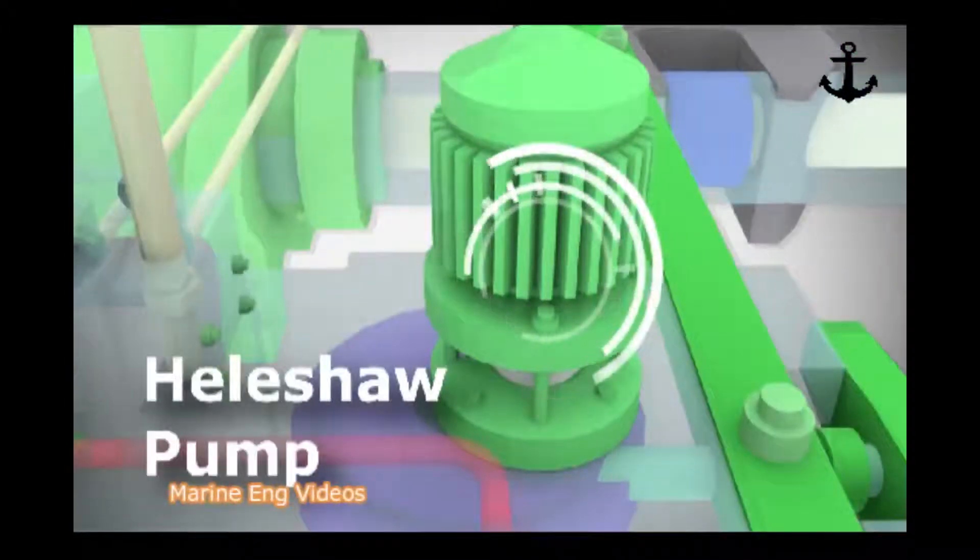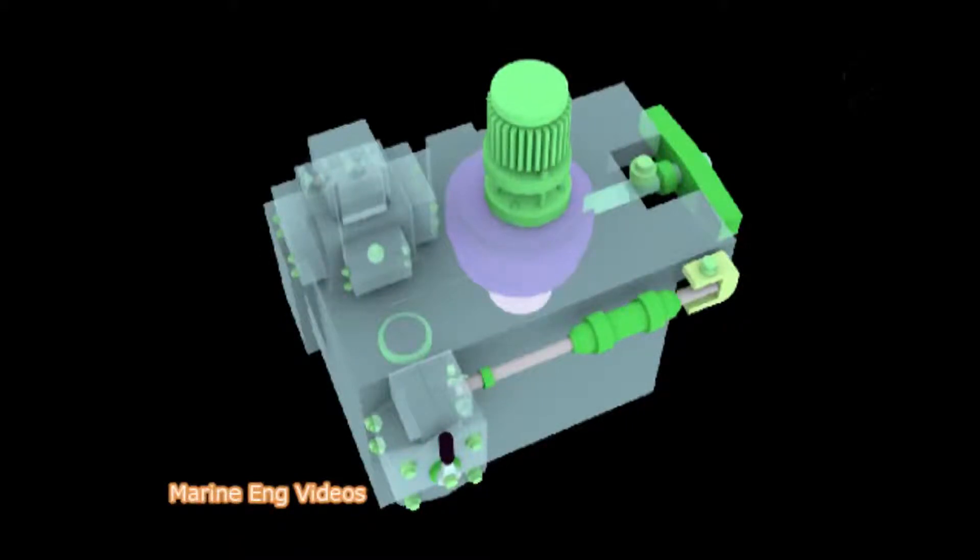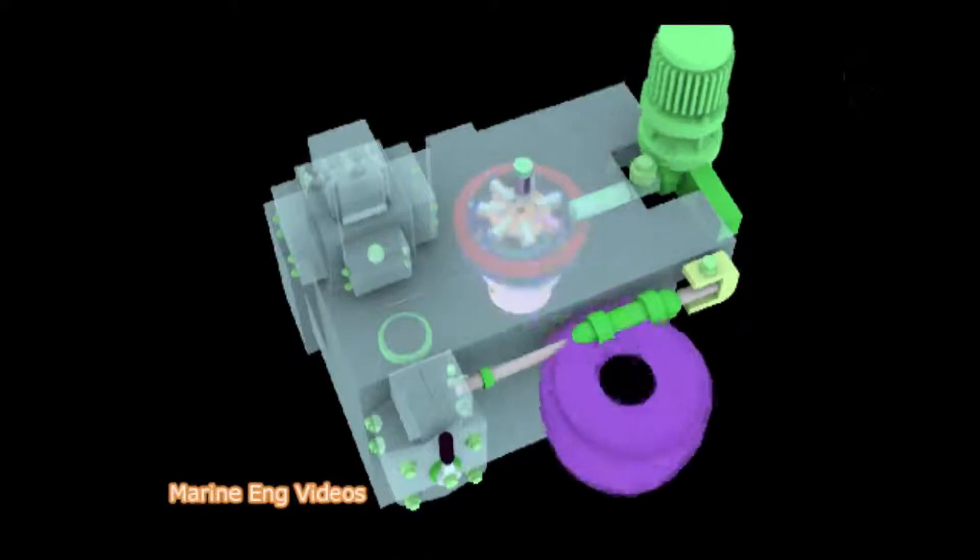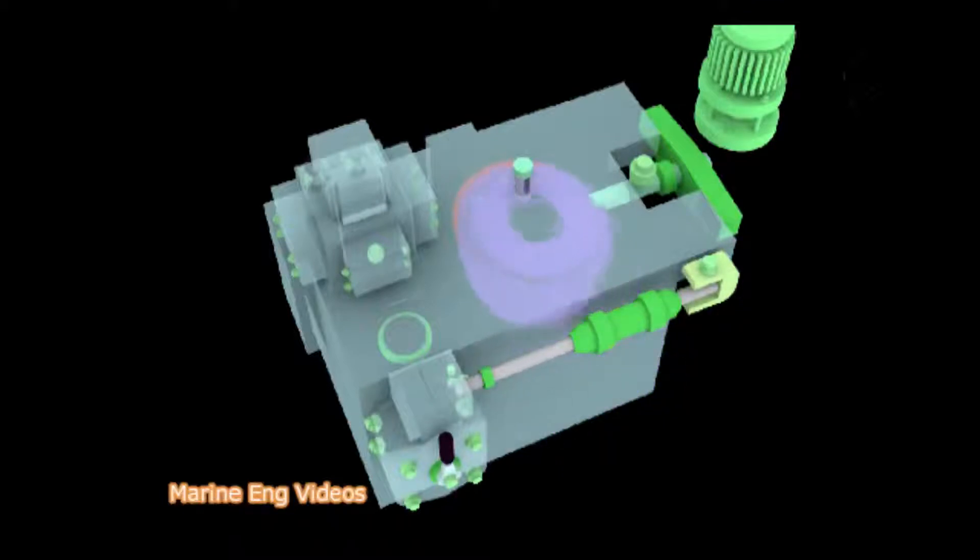Heelshaw Pump. The variable pump assembly, also known as radial cylinder Heelshaw Pump, consists of a short shaft which is attached to a cylindrical body that rotates inside the casing.